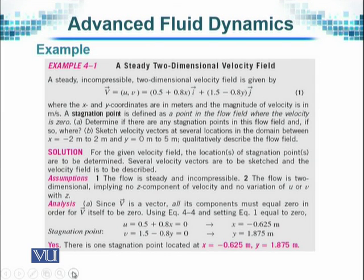We need to find the stagnation point. We need to find the velocity vector at several locations and also then we need to describe the general flow field and graph it also. Now we come to the solution. It is important that first we understand the flow field situation. For locations of stagnation points, the definition has been given that the velocity has to be zero at that point.